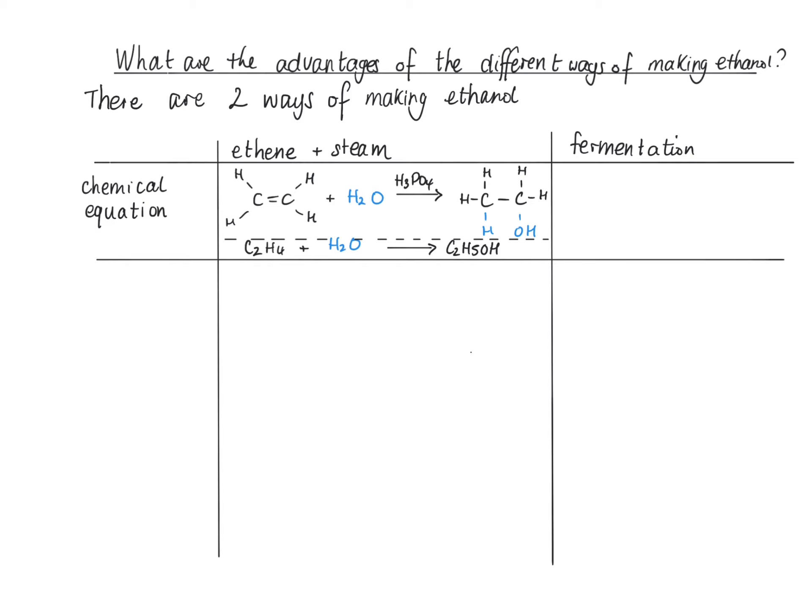The chemical equation for ethene plus steam is ethene C2H4 plus H2O with a phosphoric acid catalyst H3PO4, and that makes ethanol. The other way you can write the chemical equation is just C2H4 plus H2O goes to C2H5OH. Remember, C2H5OH is ethanol.